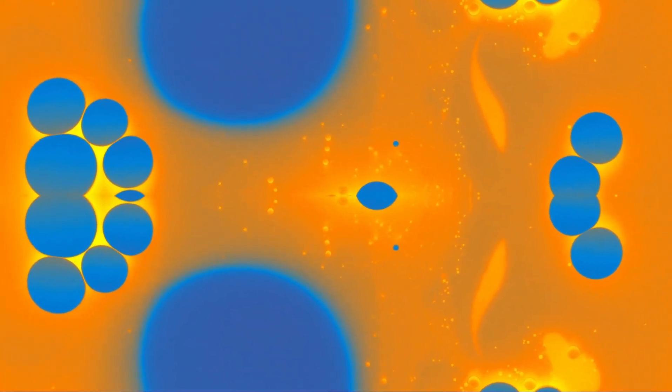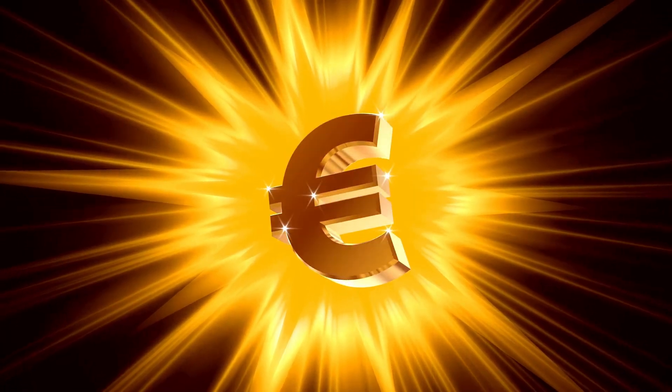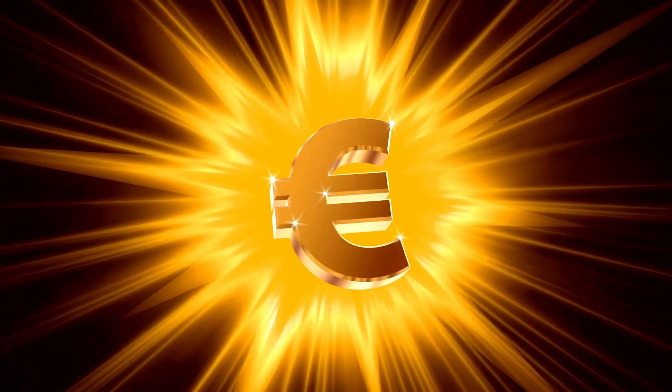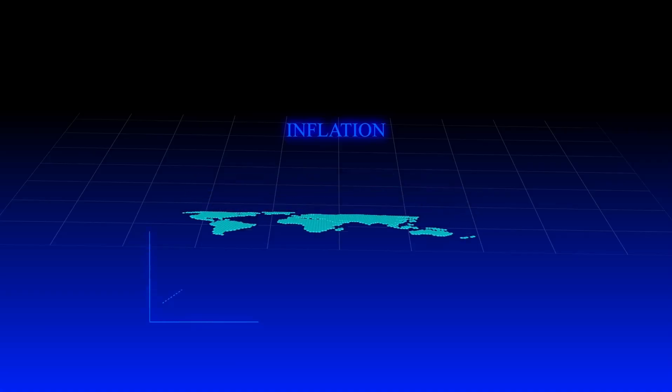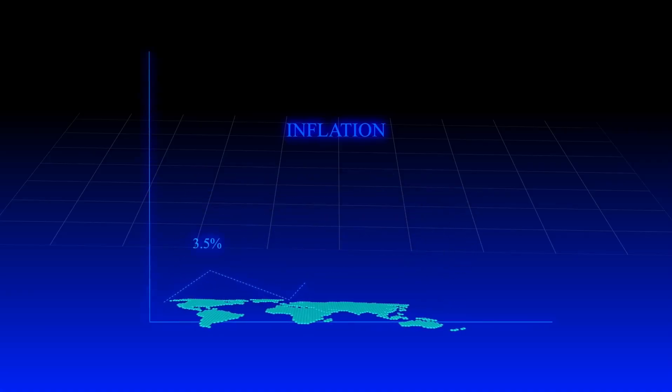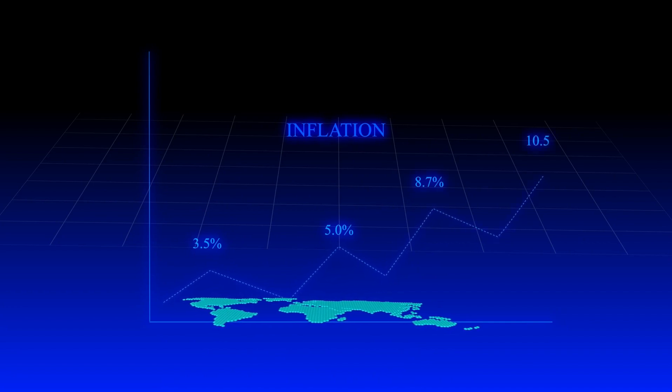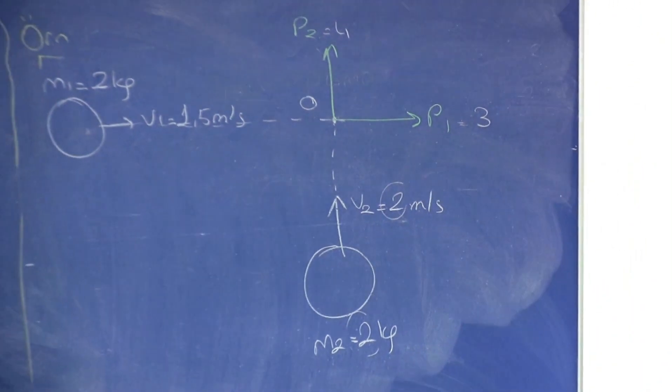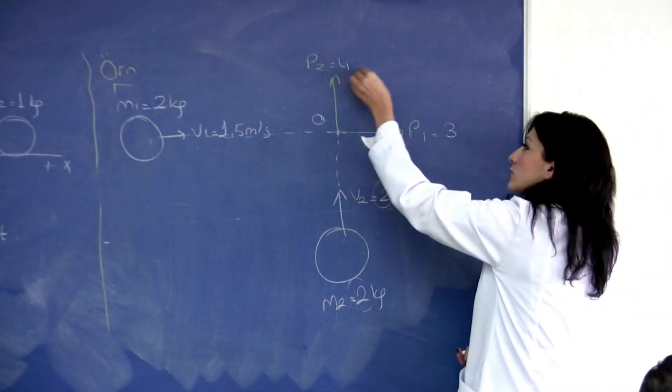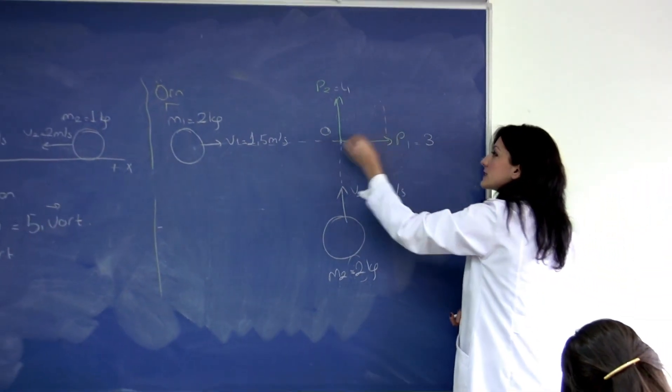Despite its appeal, eternal inflation has limitations. It's eternal only into the future, not into the past. In fact, it's been demonstrated that inflationary space-time doesn't extend into the past infinitely and must have originated from a prior non-inflationary and possibly singular state. The issue of past time-like incompleteness can't be avoided by considering alternatives like bouncing cosmologies or cyclic cosmologies, as they face similar challenges.